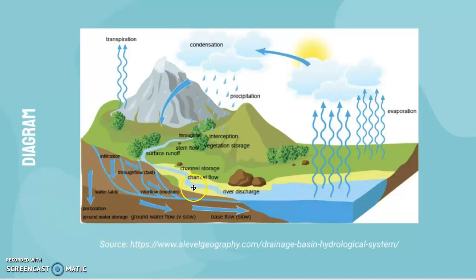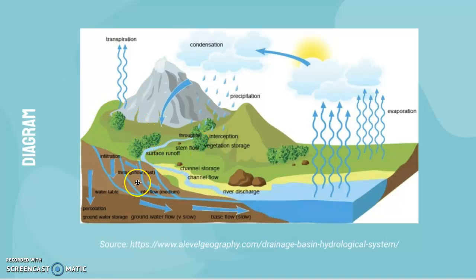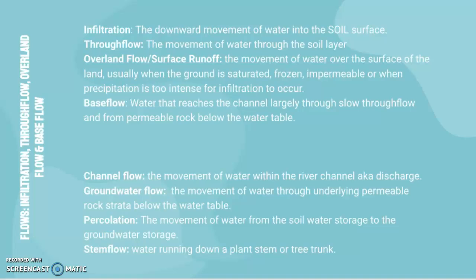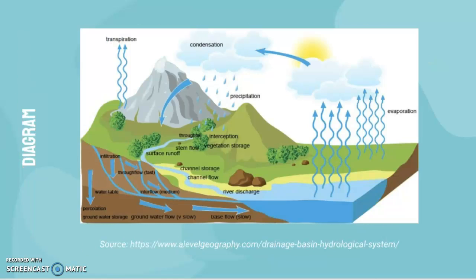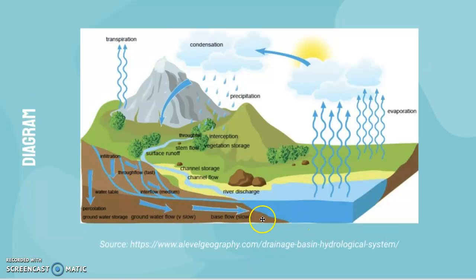Through flow only occurs above the water table. Overland flow and surface runoff is the movement of water over the surface of the land, usually when the ground is saturated, frozen, impermeable, or when precipitation is too intense for infiltration to occur. For example, if precipitation lands on a saturated or impermeable surface, it would run off into the channel. Base flow is water that reaches the channel largely through slow through flow and from permeable rock below the water table — shown in the diagram as flowing from the groundwater store into the channel.